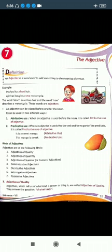An adjective can be placed before or after the noun. It can be used in two different ways: attributive use and predicative use. When an adjective is used before the noun, it is called the attributive use of adjective.